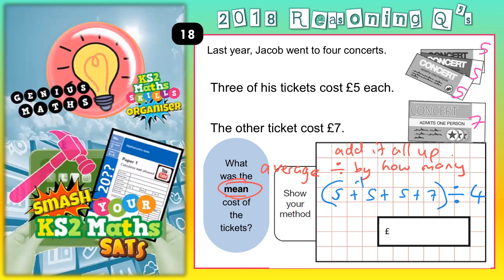So it's the total of all the ticket costs divided by 4. Three fives are 15, and 15 plus 7 is 22. So we need to do £22 divided by 4.